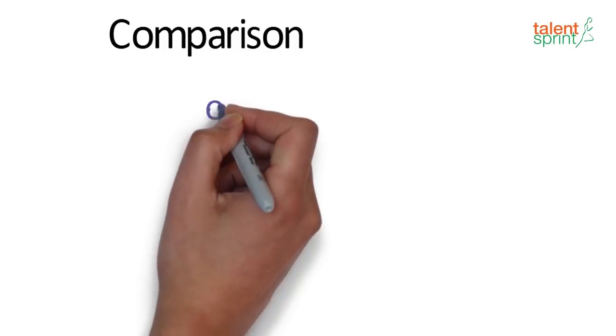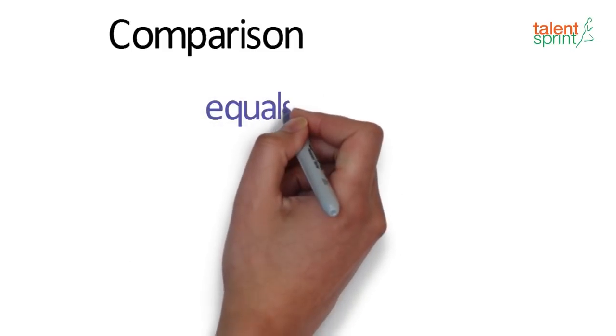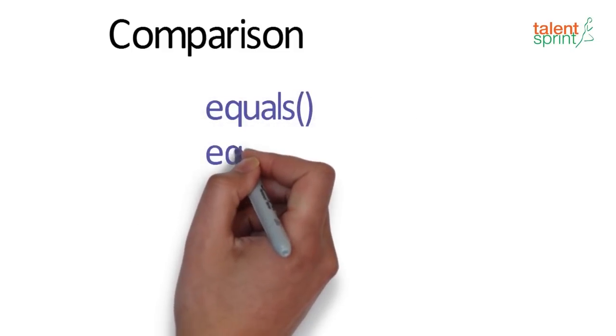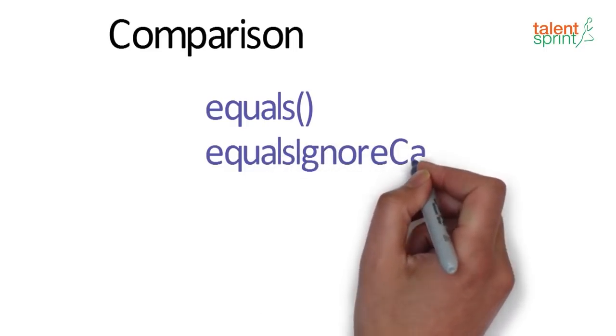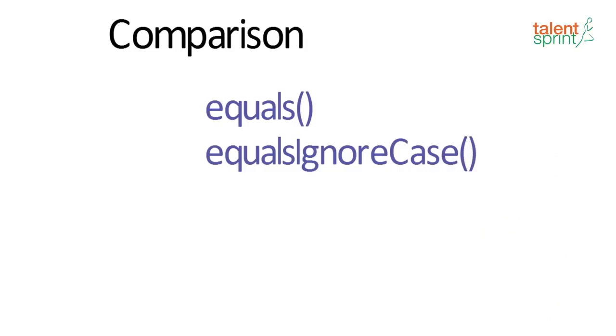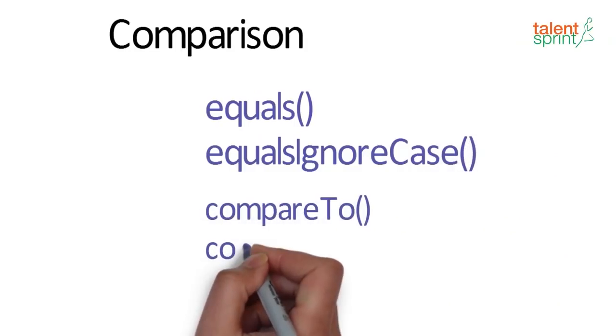So starting off with comparison, the four most frequently used string comparison methods are equal, equals ignore case, which will ignore the case of strings while comparison, compare to and compare to ignore case.